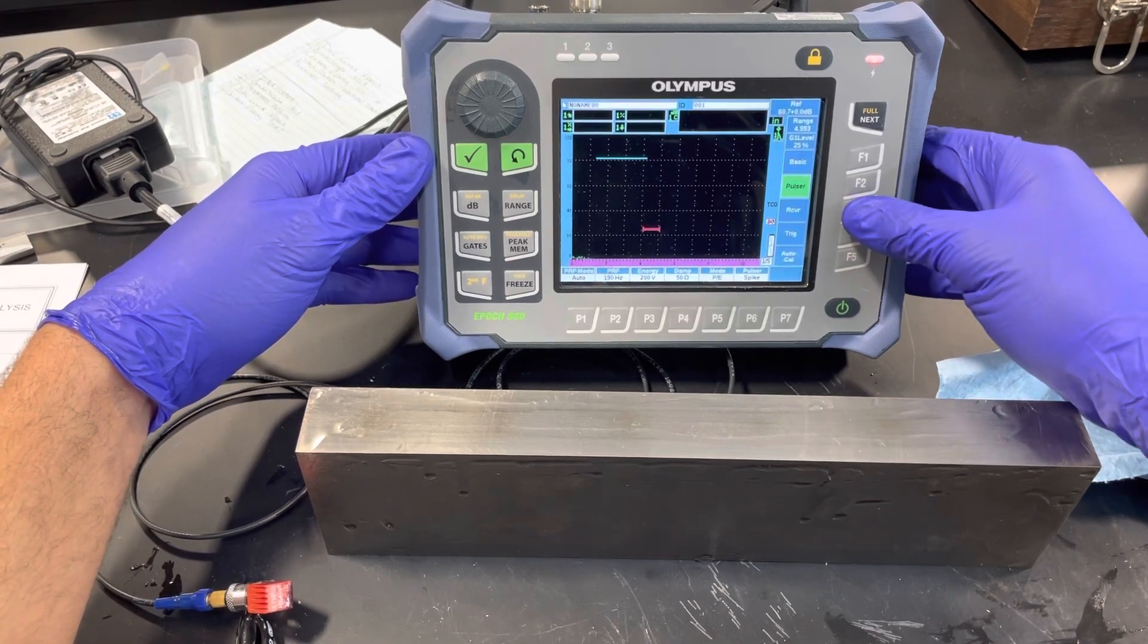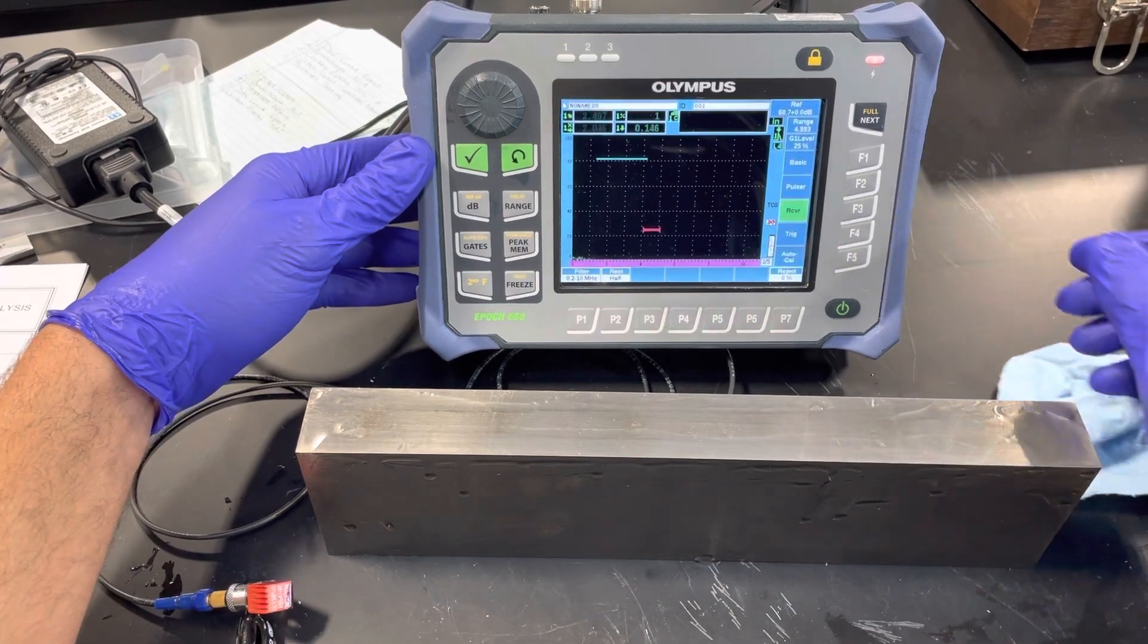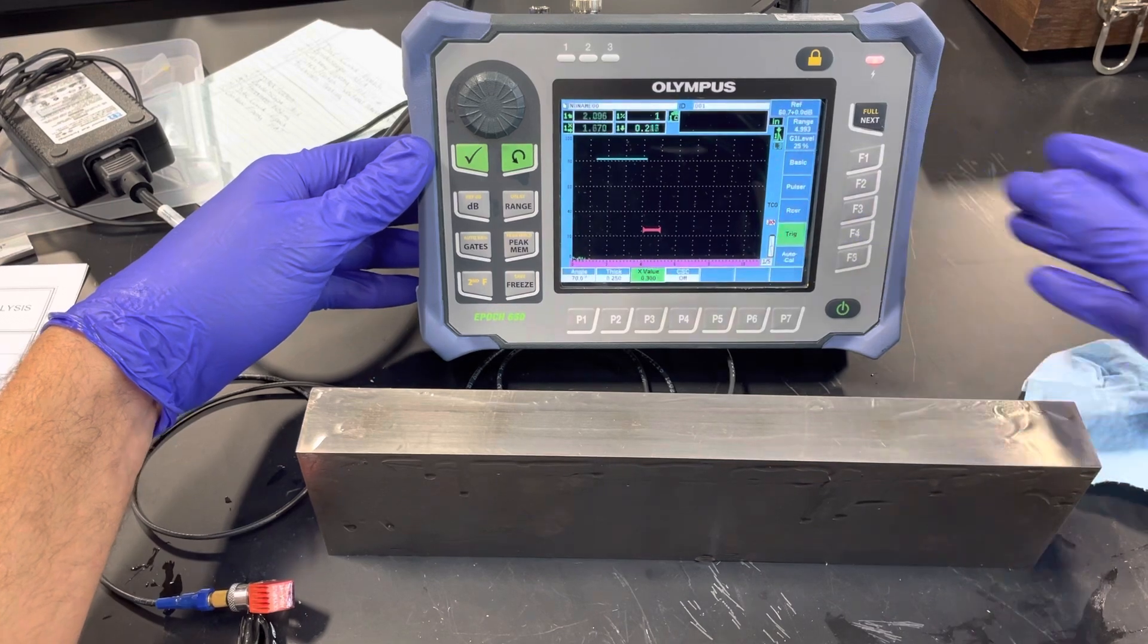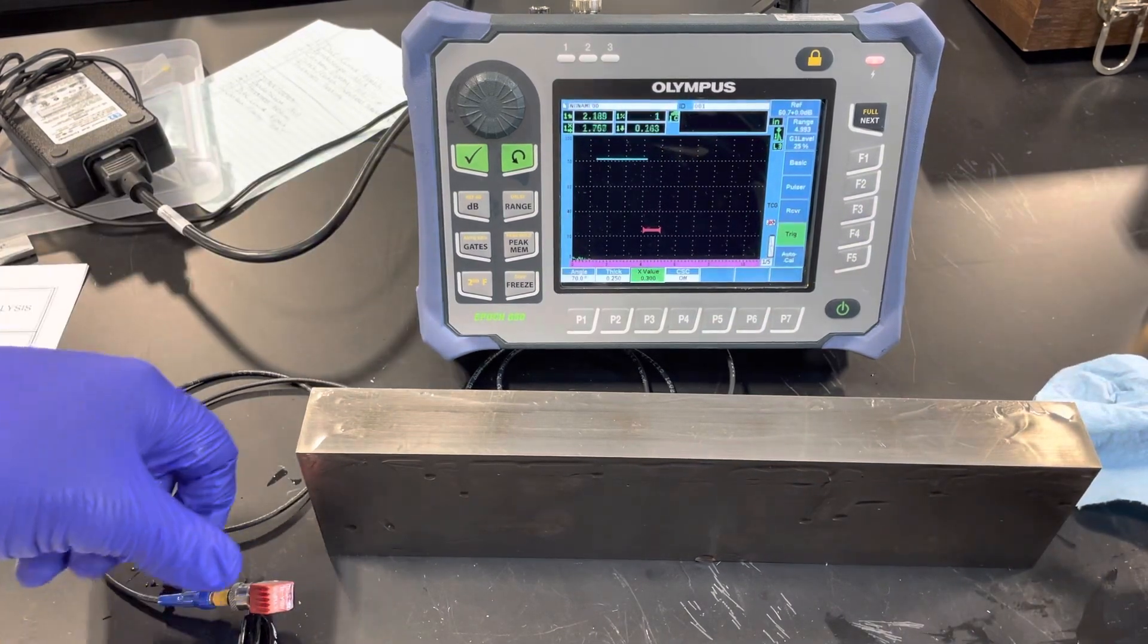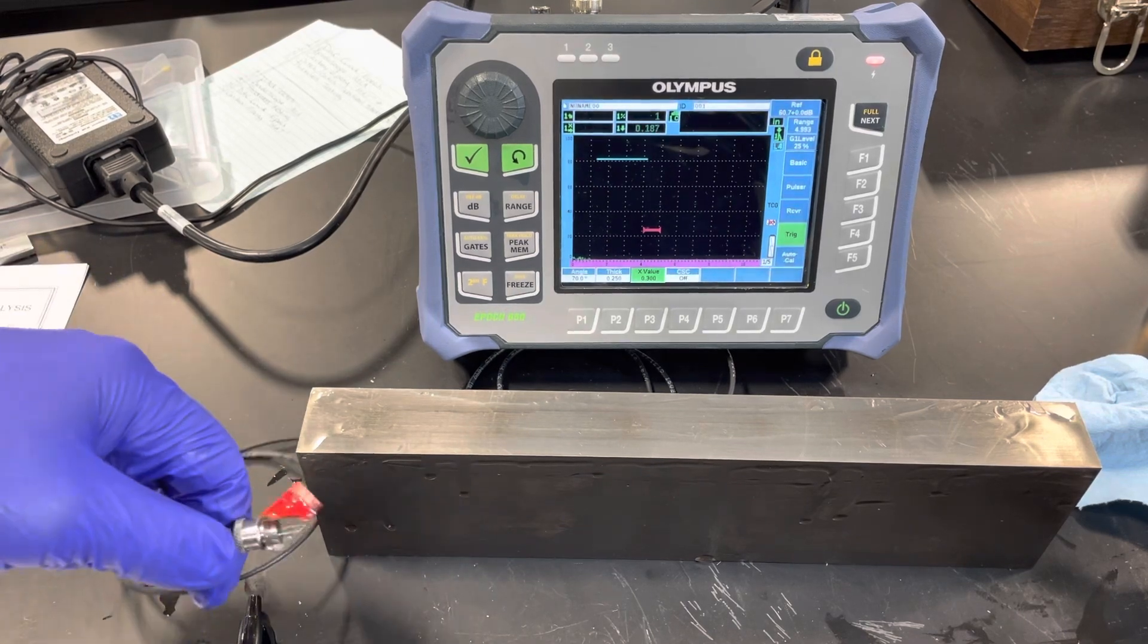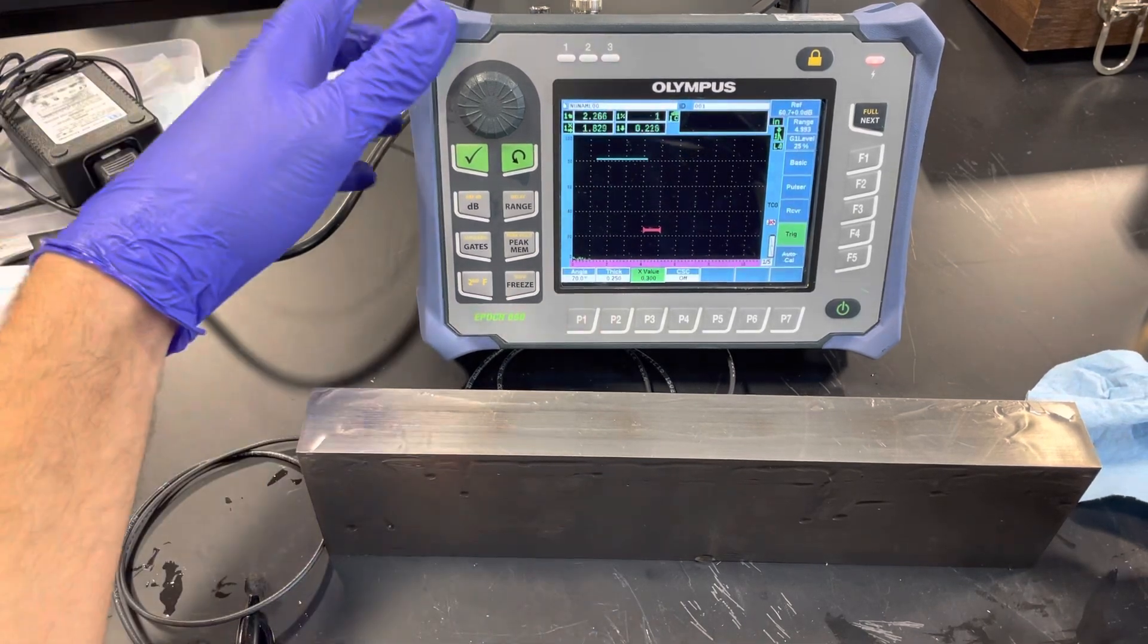Damper pulse echo, receiver on half negative, and our filter 0.2 to 10 megahertz. Got it working with a 70 degree angle, thickness of quarter inch, and our X values 0.300.